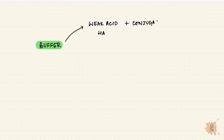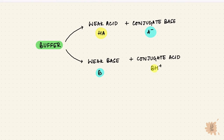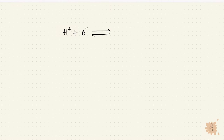A buffer is a mixture of a weak acid and a conjugate base, or a weak base and a conjugate acid. Together, they're called a buffer pair. A buffered solution resists a change in pH. If hydrogen ions are added, the buffer binds to them reversibly. So if the hydrogen ion concentration is high, the reaction shifts to the right. If it's low, the reaction shifts to the left and more hydrogen ions are freed.